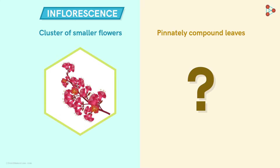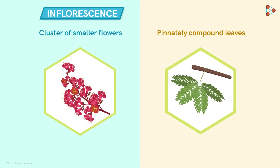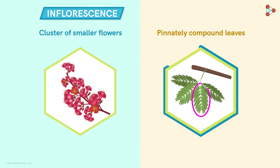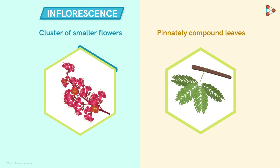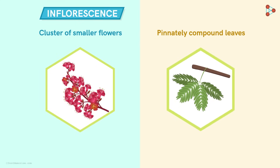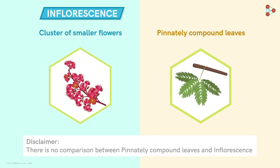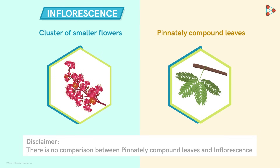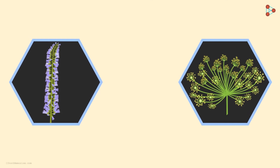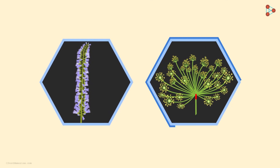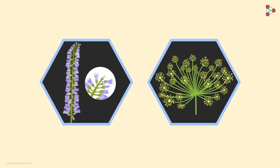Remember the structure of pinnately compound leaves? As the small leaflets arrange themselves and give us a complete structure, similarly here, these small flowers make up the complete inflorescence. Please note that the pinnately compound leaves and inflorescence are just compared to understand the concept better — we are neither comparing nor truly relating the two. Getting back to our concept, the flowers form a group along the stem or at the apex to form the inflorescence.